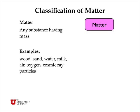Now we can classify matter. Matter is basically any substance that has mass. If you can see it or interact with it and it's not a photon, then it's probably matter. Almost everything we interact with except for light is matter, including wood, sand, water, milk, anything.